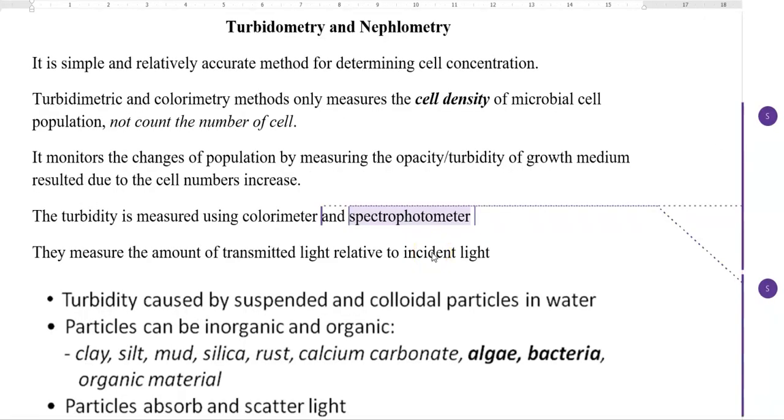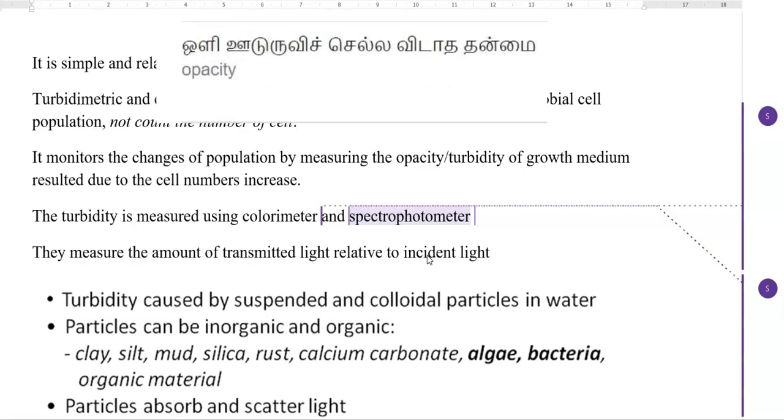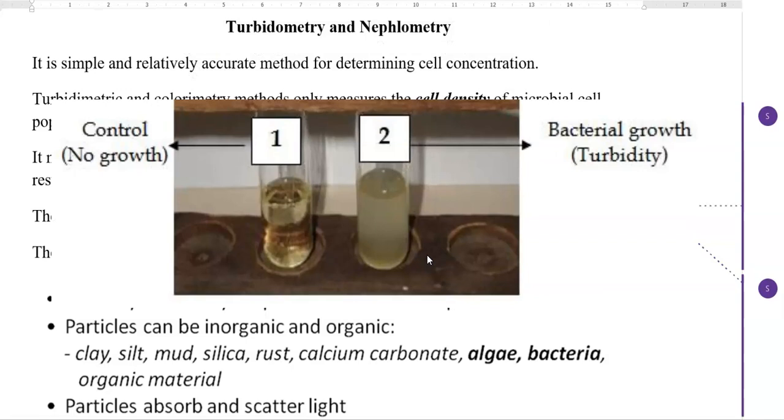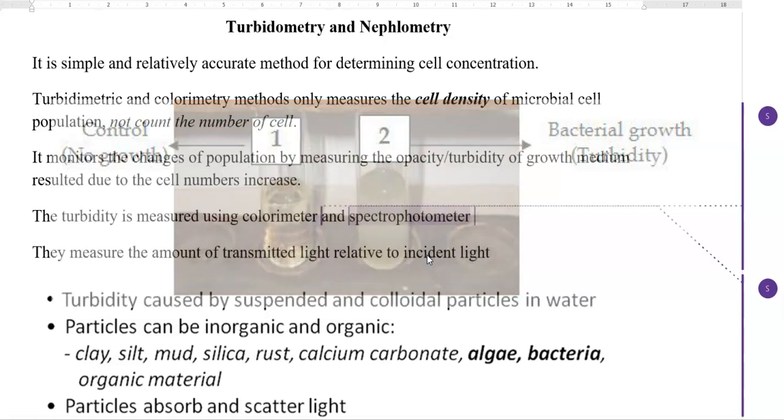Next, we look at the explanation related to turbidometry and nephilometry. Both are simple and relatively accurate methods for determining cell concentration. Turbidometry and colorimetry methods mainly measure the cell density of microbial cells, and they may not count the exact number of cells present in the sample. These methods monitor changes in the population by measuring the opacity or turbidity of the growth medium, mainly resulting from the increase in cell numbers.